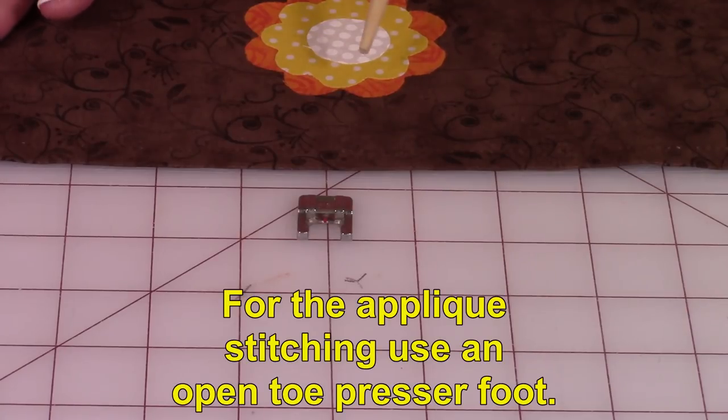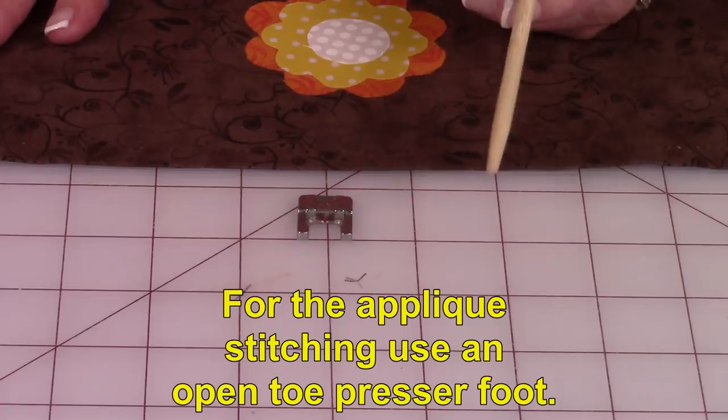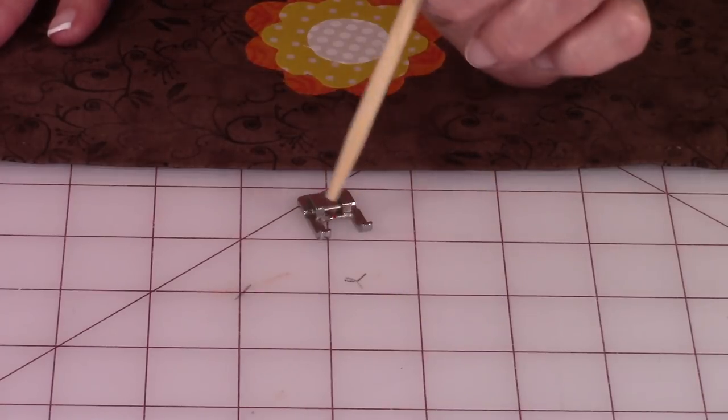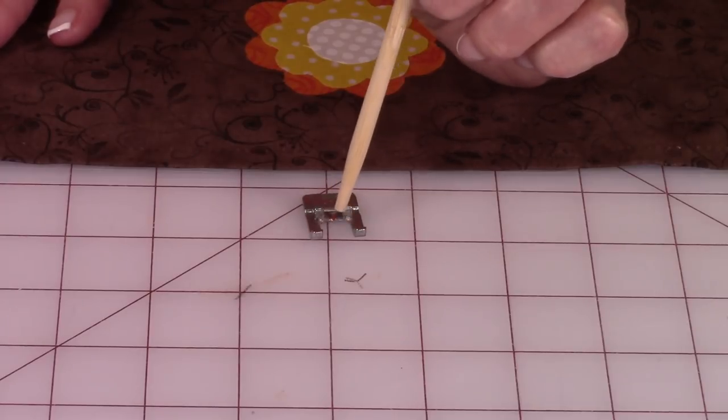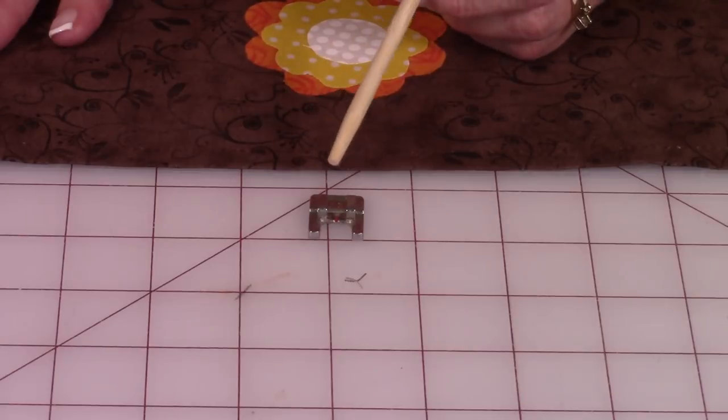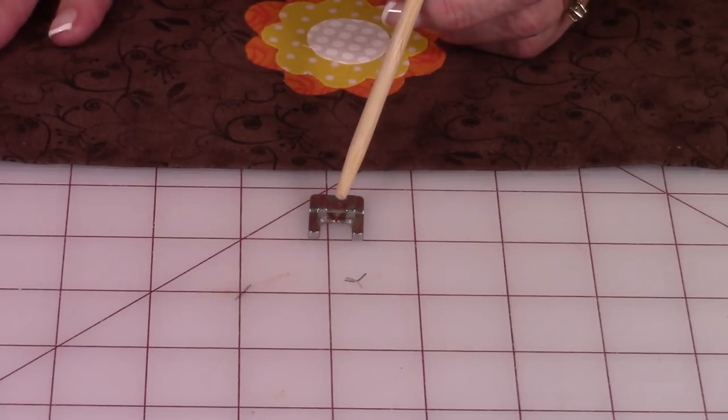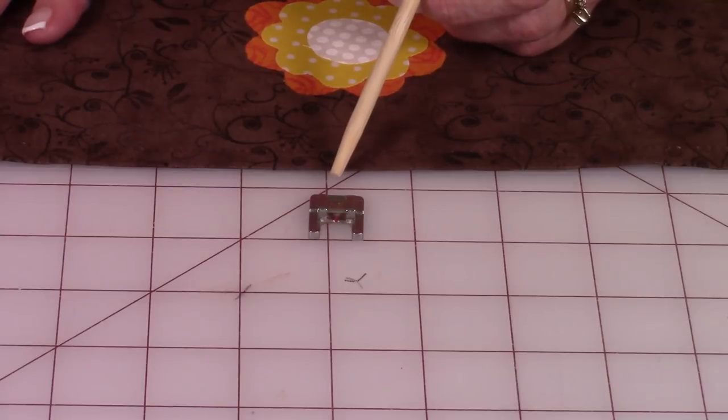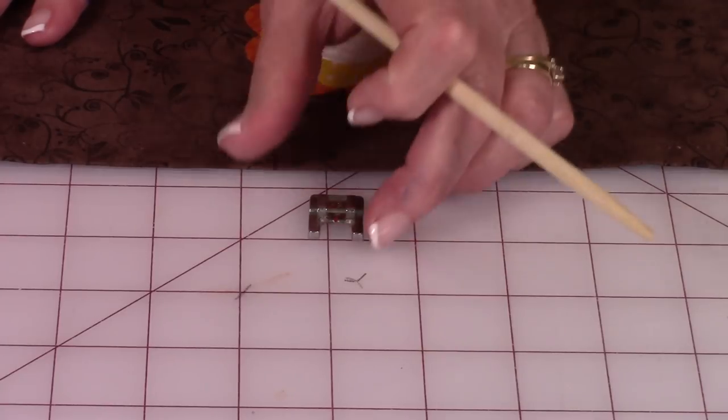I recommend when you're doing the applique stitches around the edges that you use an open toe presser foot. There's nothing in front of the needle. The needle is going right down through there and you can see very easily exactly where you're stitching. You can buy these on the internet. You can go on to amazon.com, enter the name and model of your sewing machine and ask for open toe presser foot and a variety of options will appear. They're not very expensive at all.